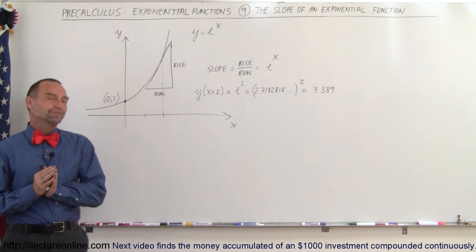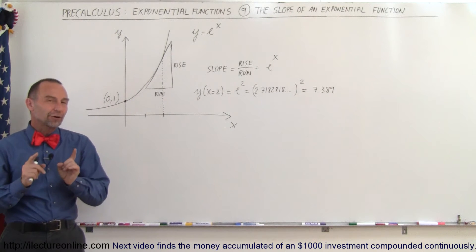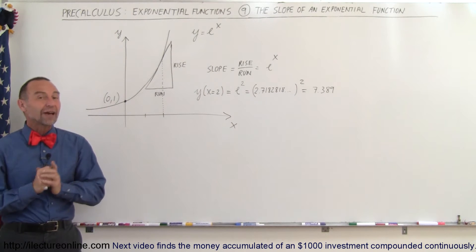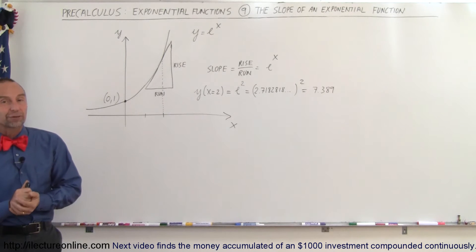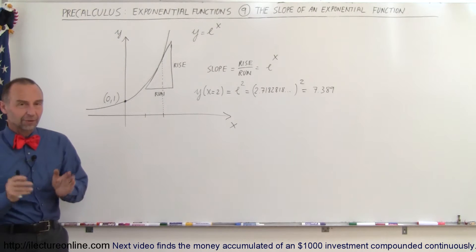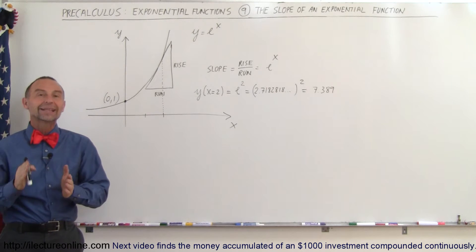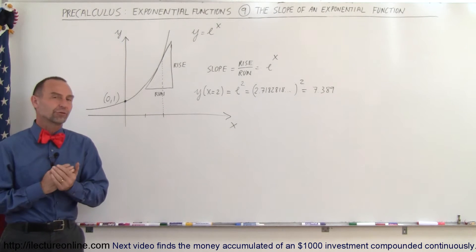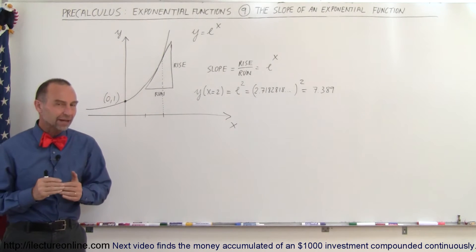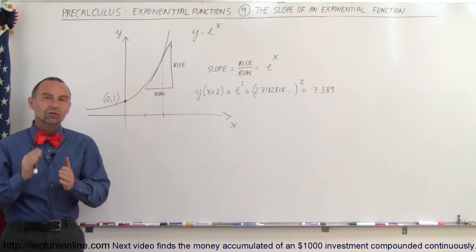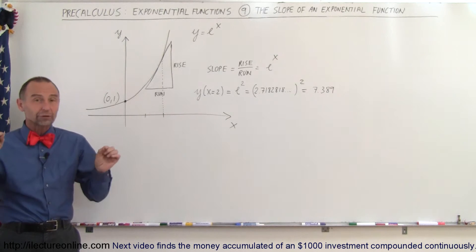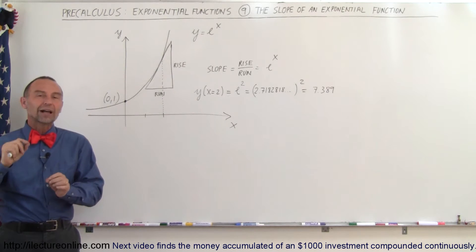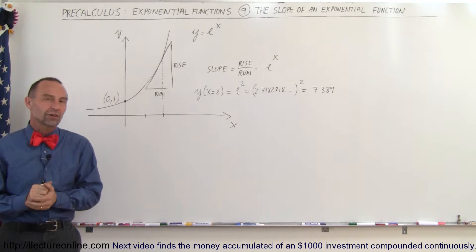Welcome to ElectronLine. Another very interesting fact of exponential functions — and of course I'm talking about the natural exponential function e to the x — is that the slope of the function anywhere along the function is equal to the value of the function itself.